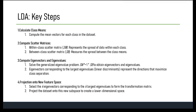To summarize, LDA aims to find a subspace where the classes are well separated while preserving class discrimination information as much as possible. This process helps in reducing the dimensionality of the data while enhancing its discriminatory power for classification tasks.